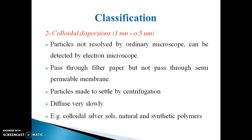The second type of dispersion is colloidal dispersion, classified on the basis of particle size. In this type, particle size ranges from 1 nanometer to 0.5 micrometer. The properties of colloidal dispersions include: particles are not resolved by an ordinary microscope, but can be detected under an electron microscope. Particles pass through filter paper, but do not pass through a semipermeable membrane.